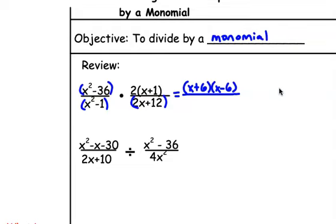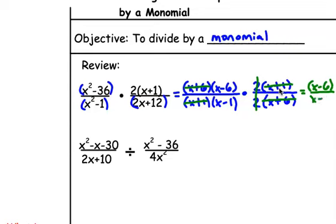x squared minus 36 factors into x plus 6, x minus 6. Same thing on the bottom. x squared minus 1 turns into x plus 1, x minus 1. This is times, so I'm not flipping the fraction. The upper right was already factored, 2 parentheses x plus 1. And the lower right needs to have a GCF of 2 taken out, 2 parentheses x plus 6. After you factor, then you can cancel. The x plus 1s, these 2s, these x plus 6s. What we're left with is x minus 6 on the top and x minus 1 on the bottom.